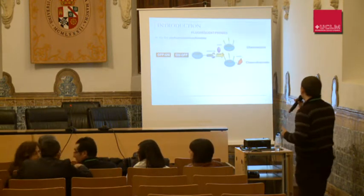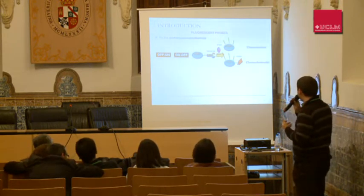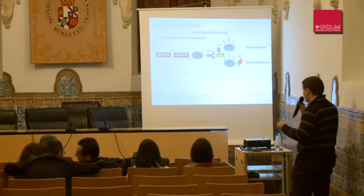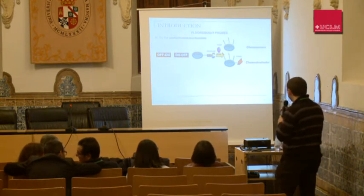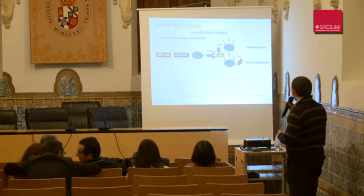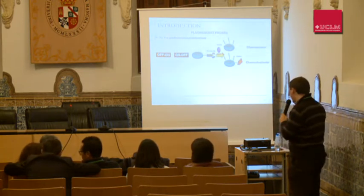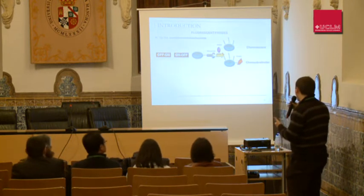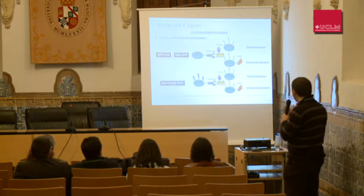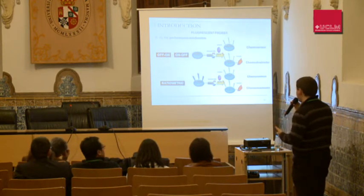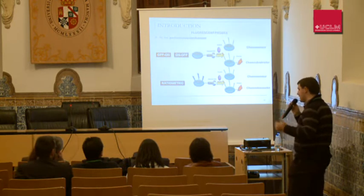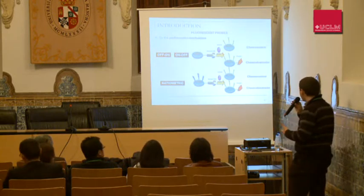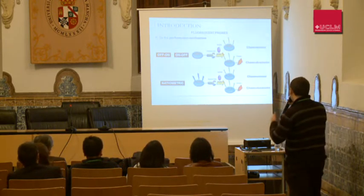We can also classify these fluorescent probes by their performance mechanism. If we have a probe that has no fluorescent properties and when it interacts with the analyte it shows fluorescent properties, we have an off-on probe. And if our probe has previous fluorescent properties and these properties are modified by interacting with the analyte, we have a ratiometric probe.